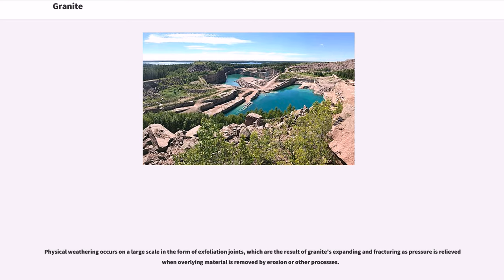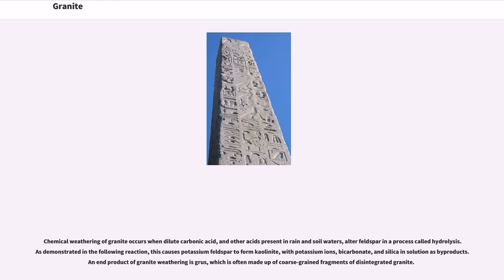Physical weathering occurs on a large scale in the form of exfoliation joints, which are the result of granites expanding and fracturing as pressure is relieved when overlying material is removed by erosion or other processes. Chemical weathering of granite occurs when dilute carbonic acid, and other acids present in rain and soil waters, alter feldspar in a process called hydrolysis. This causes potassium feldspar to form kaolinite, with potassium ions, bicarbonate, and silica in solution as by-products. An end product of granite weathering is grus, which is often made up of coarse-grained fragments of disintegrated granite.